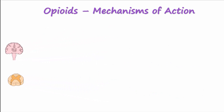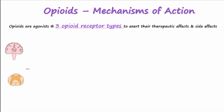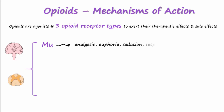Opioids act as agonists at three main receptor types to exert their actions. Mu receptors are responsible for the majority of opioid effects, including but not limited to analgesia, which is the pain-relieving effect, euphoria, sedation, respiratory depression, and decreased peristalsis in the gut, leading to constipation.